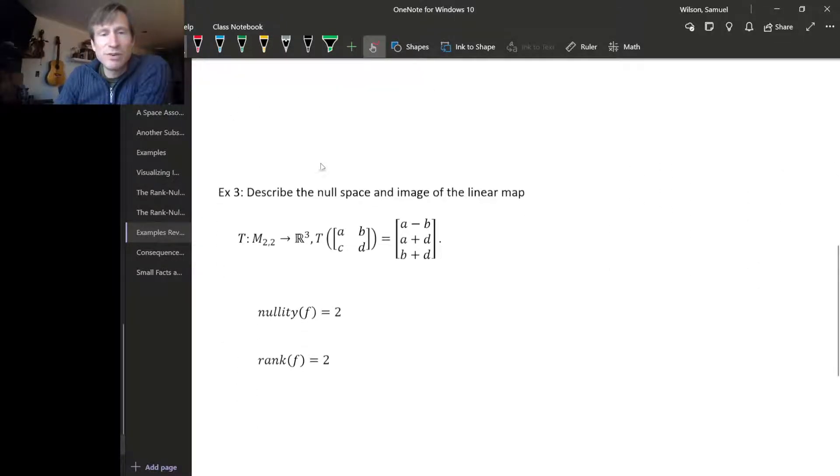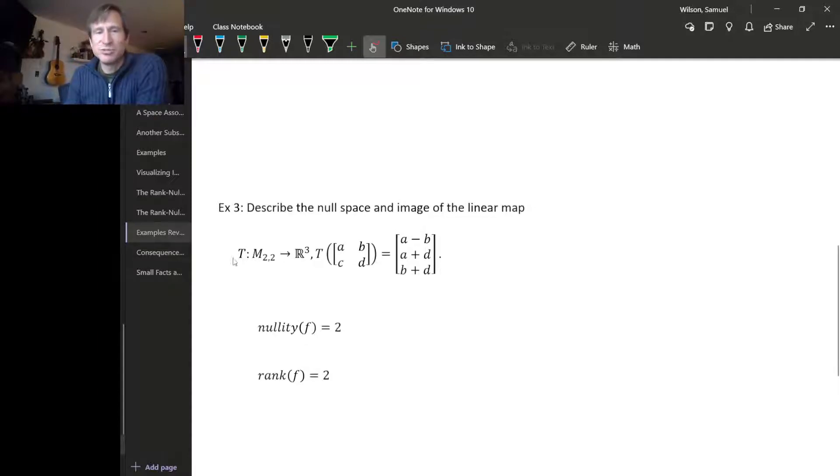The last example we looked at was from a matrix space to a Euclidean space. So this crazy map from M₂₂ to R³, and the nullity we worked out was 2, and the rank we worked out was 2, and 2 plus 2 is 4 of course. And 4 is indeed the dimension of the matrix space M₂₂. So the Rank-Nullity Theorem checks out once again.